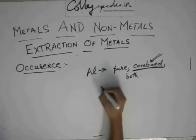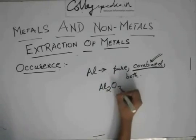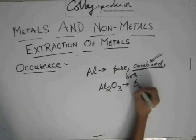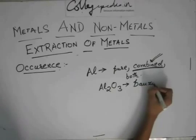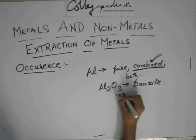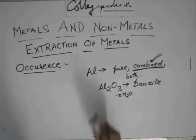Aluminium generally occurs as Al2O3, which is called bauxite. This has xH2O molecules attached to it, but that is not of major concern for us.